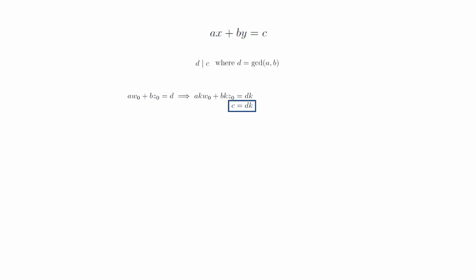Substituting this into the right-hand side of the equation and inserting parentheses on the left side of the equation, we get a times kw0 plus b times kz0 equals c. By setting x0 equal to k times w0 and y0 equal to k times z0, we get a solution x0, y0 to the equation ax plus by equals c.